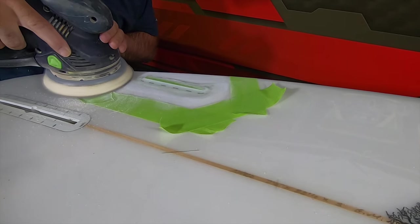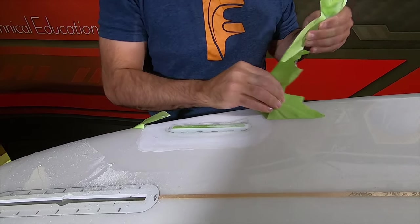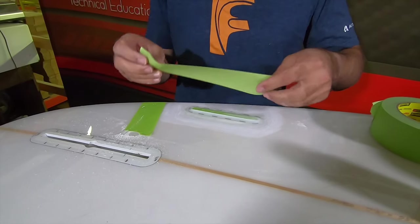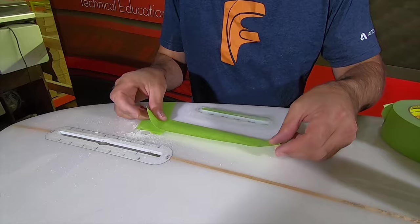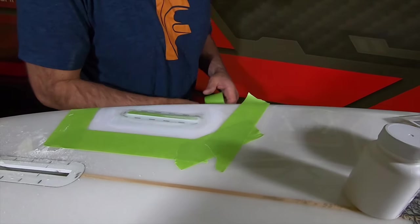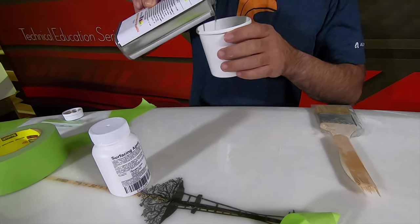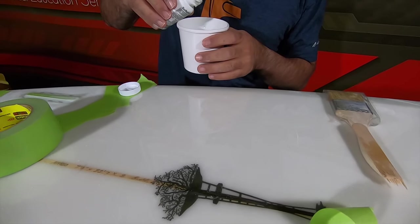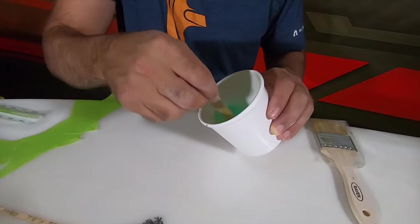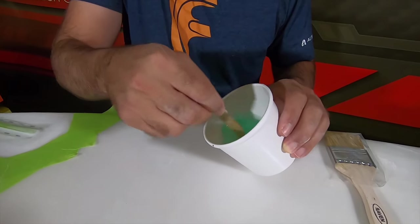Now we're using the sander to feather down the edge of the fiberglass around the box repair. We're not sanding over the whole thing yet. We're going to re-mask it and put a sanding coat or surface coat down, a little bit of UV cure resin with surface agent in it.